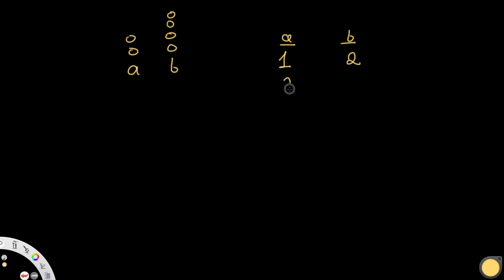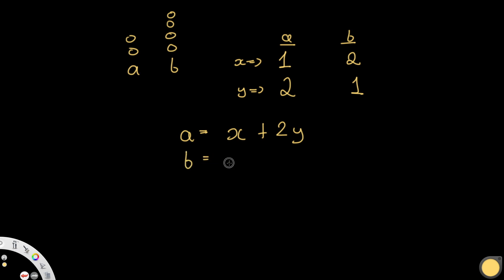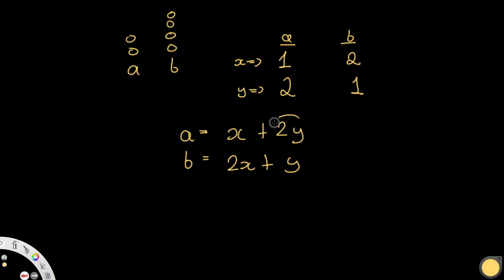Now let's look at the other conditions by writing this as an equation. There are two types of moves: X, where we remove one coin from A and two from B, and Y, where we remove two from A and one from B. So the total coins removed from A is X plus 2Y, meaning A = X + 2Y. Similarly, the coins removed from B is 2X plus Y, meaning B = 2X + Y.